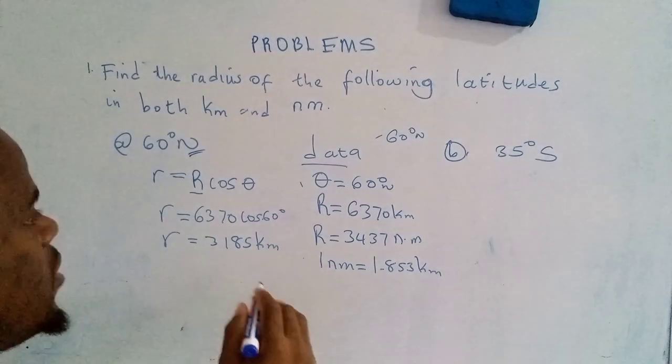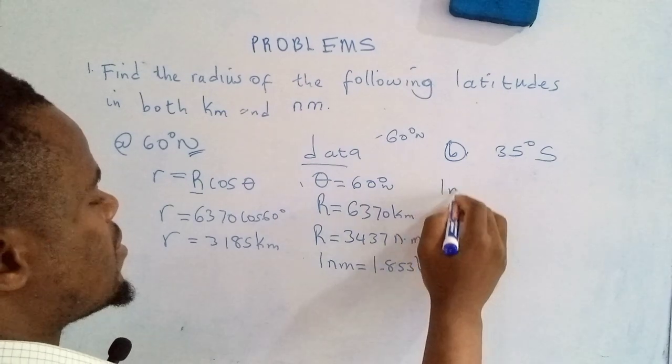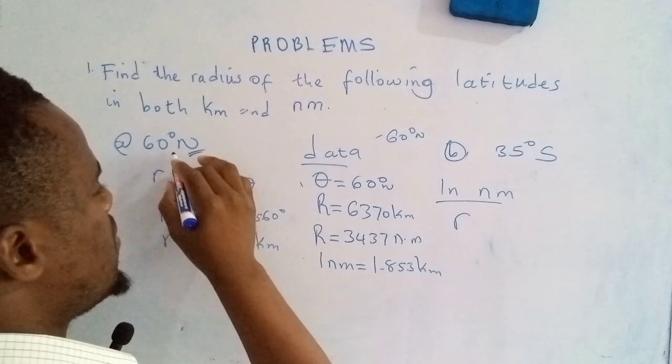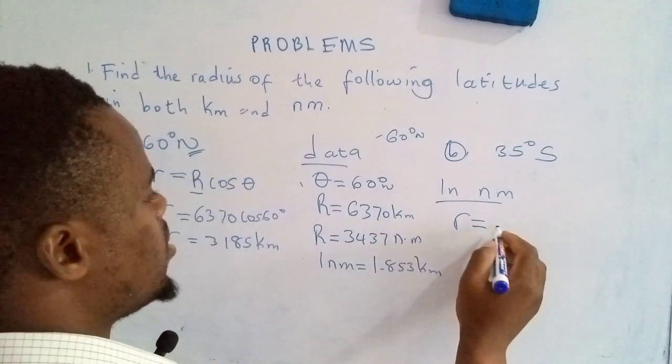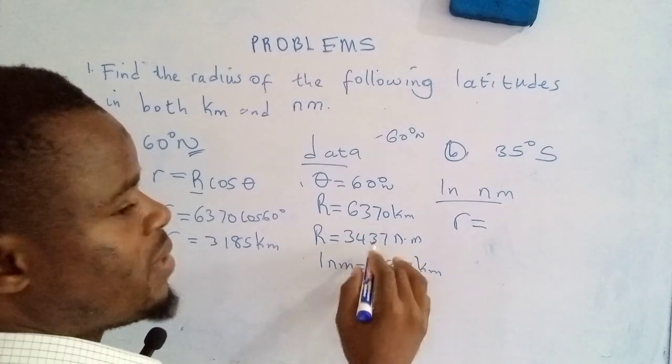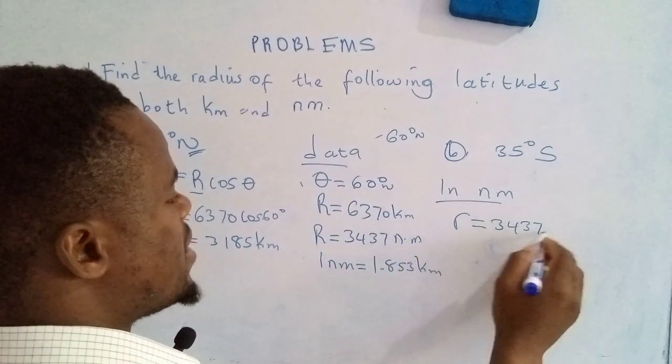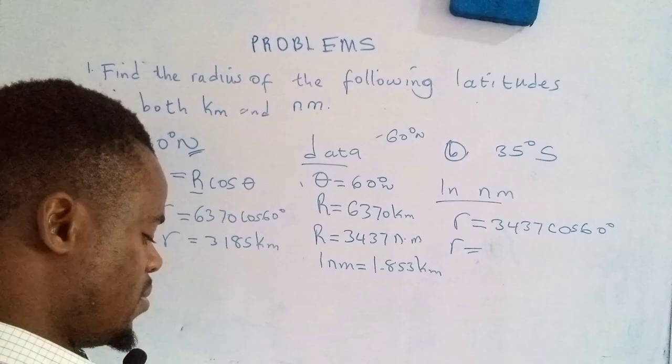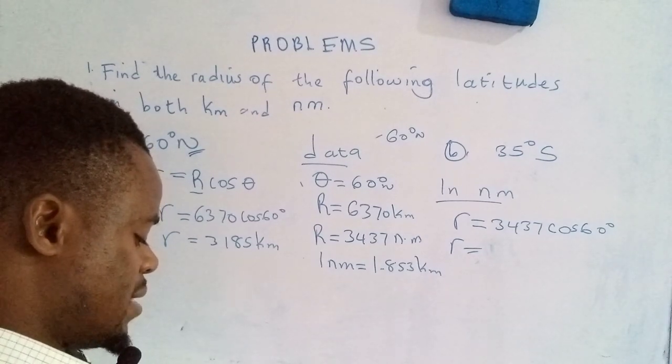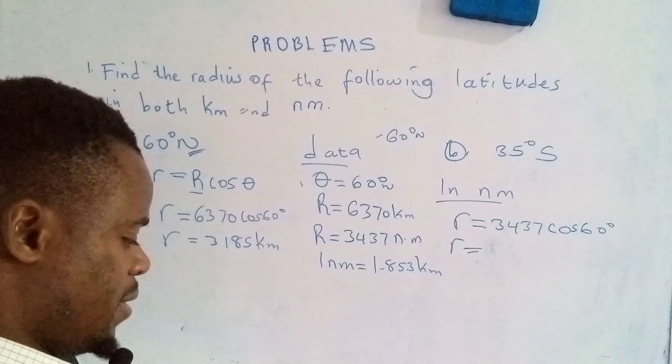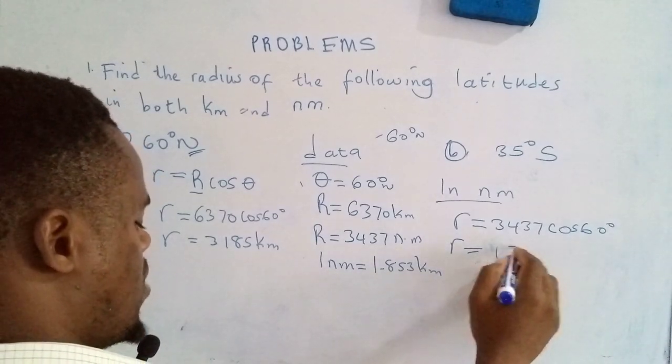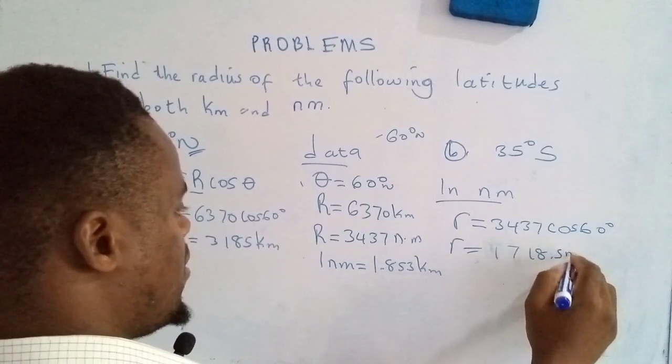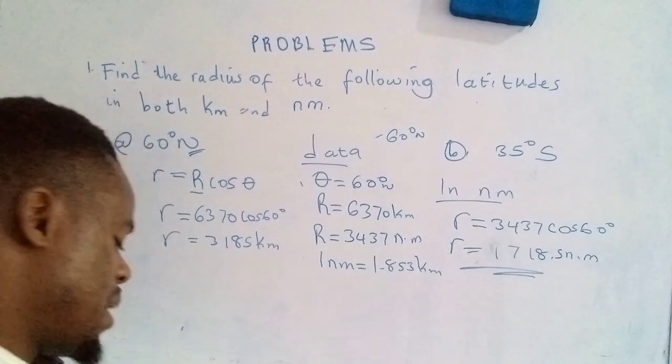How about in nautical miles? In nautical miles, the radius of this latitude is equal to, we'll pick on this value which is in nautical miles, 3437 cos 60 degrees. That gives me 1718.5 nautical miles. So we're done with the first one. Let's move on to the second one.